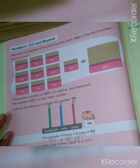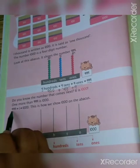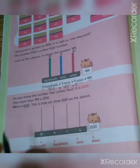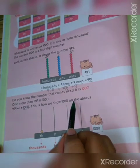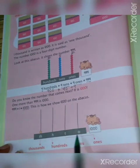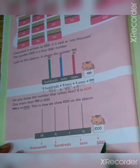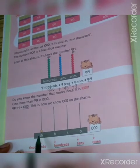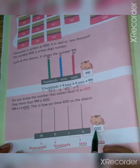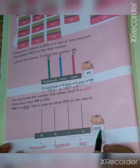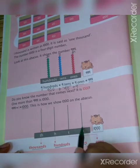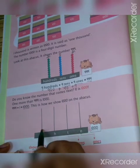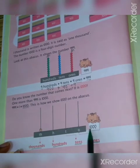I hope you all understood. When you add nine hundred ninety-nine plus one, that value comes one thousand. This is how we show one thousand on the abacus. In the hundreds, tens, and ones place, no beads are there, so we don't have to draw anything there. But in the thousands place, one is there, so you have to draw one bead. This is called one thousand.